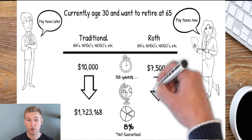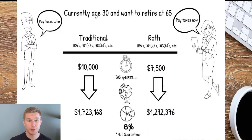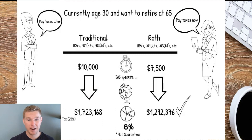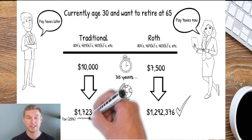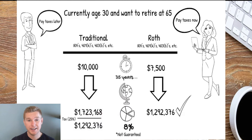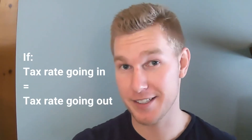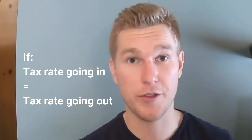Rachel, on the other hand, ends up with $1,292,376. Tom thinks he's smarter than Rachel for using the traditional account, but Rachel knows that when Tom withdraws the money he'll have to pay taxes. Assuming Tom pays 25% in taxes on withdrawal, he ends up with exactly $1,292,376 after tax — the same as Rachel.